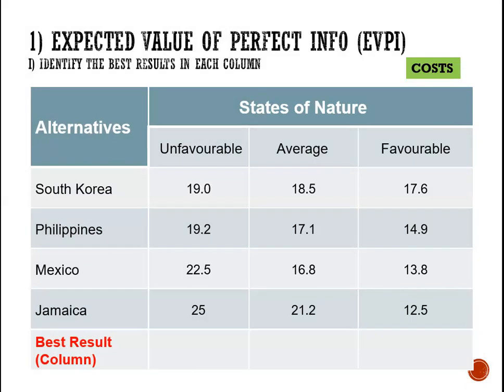We are doing step one. The first thing we need to do is identify the best results in each column since we will need to multiply them by the probabilities. So the unfavorable column: we have South Korea 19, Philippines 19.2, Mexico 22.5, and Jamaica 25. Of these, the lowest cost is 19 million, so we identify that as the best result in the unfavorable column. For the average state of nature, we have 18.5, 17.1, 16.8, and 21.2. Of these, the lowest is 16.8 million. And remember we are choosing the lowest because these figures represent cost.